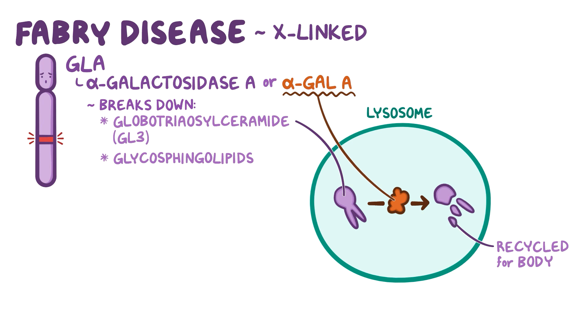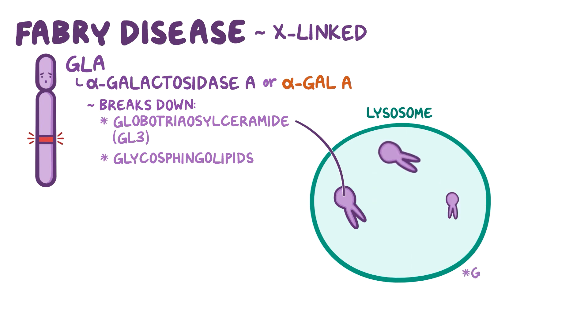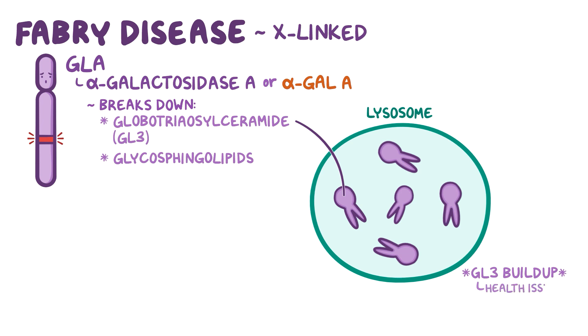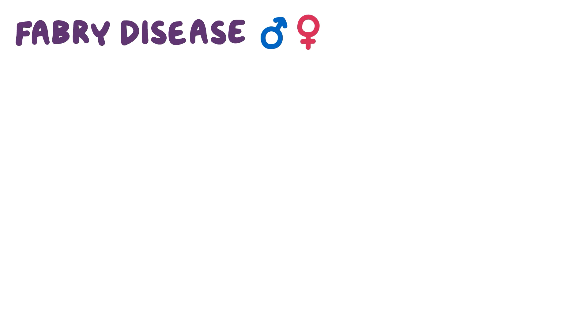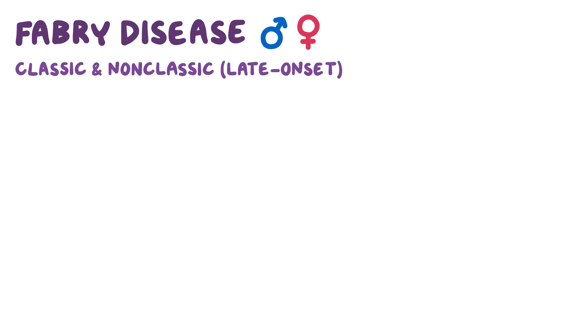Without alpha-gal, these GL3 molecules build up inside the lysosomes — the recycling centers of the cells — causing a variety of symptoms and health issues. Fabry disease affects males and females, and it has two forms: classic and non-classic, or later onset.